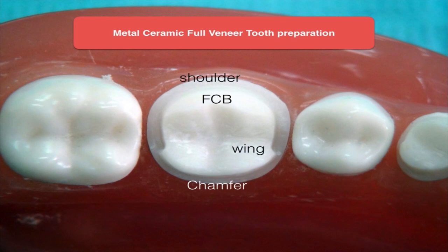When using a metal-ceramic restoration where only ceramic is on the facing side and metal is on the lingual side — wherever metal comes, you keep a chamfer margin, and wherever there is ceramic, you give a shoulder margin. The point where the chamfer and shoulder margins meet is called the wing preparation.